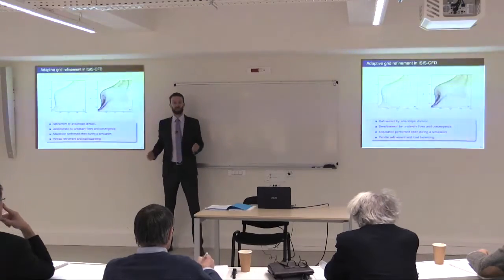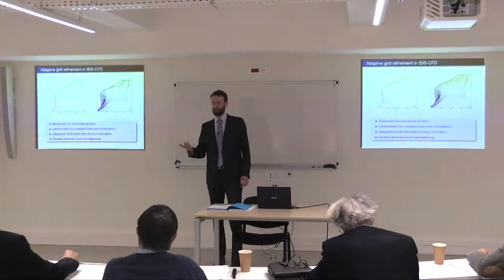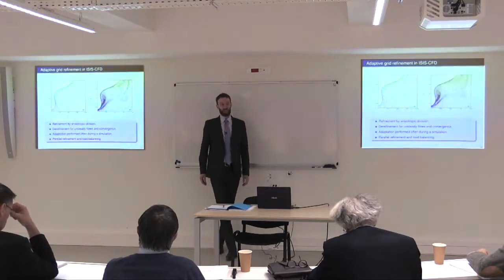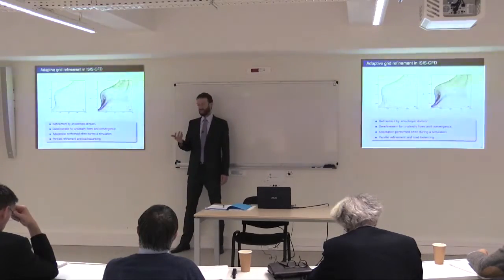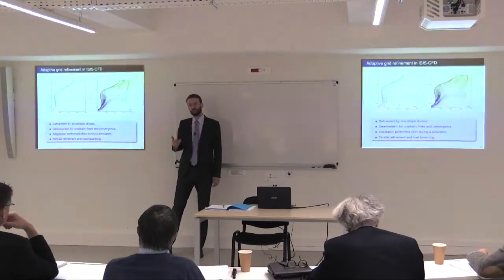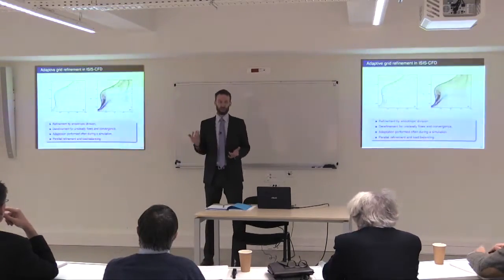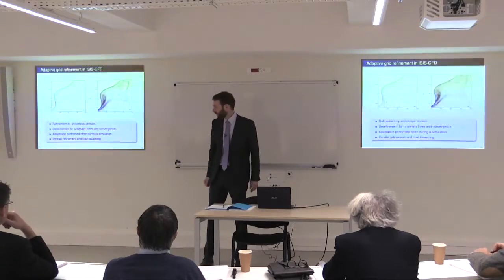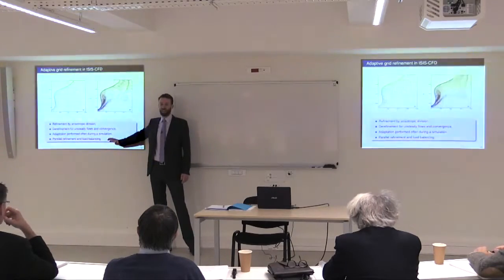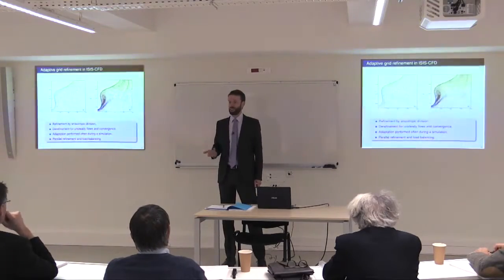Flexibility imposes the requirement to do unsteady flows, and unsteady flows mean derefinement — the capability to undo earlier refinements. Because we wanted to do derefinement for unsteady flows, and because this cell division is rather cheap, it is possible to perform the mesh adaptation quite often during a simulation — up to hundreds of times. But if we want to adapt often, then the mesh adaptation has to be effectively parallelized so that it doesn't become a bottleneck in the whole solution.